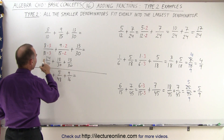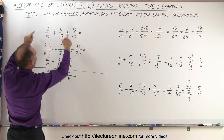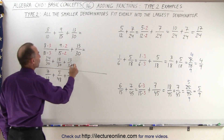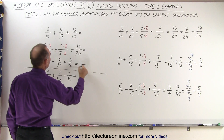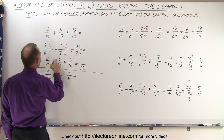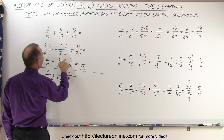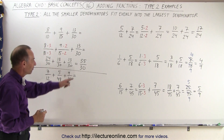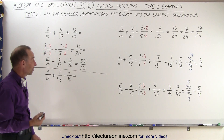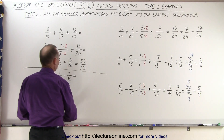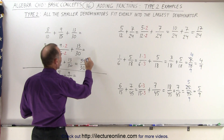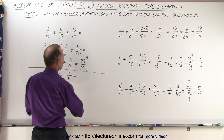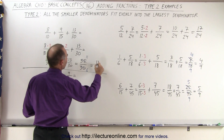Every one of these fractions is exactly the same as what I had before, just in a different form. Now they're over the same common denominator, which means I can add the numerators together. The denominator will be 30, and the numerators: 24 plus 18 is 42, plus 13 is 55. Notice the number on top ends in a 5 and the number on the bottom ends in a 0, so they're both divisible by 5. I divide the top by 5 to get 11, and the bottom by 5 to get 6, which means in reduced form this becomes 11 over 6.